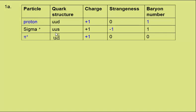The sigma plus, we're told, consists of an up-up and a strange quark. Therefore, it has a strangeness of one strange quark, which is minus 1.